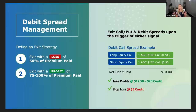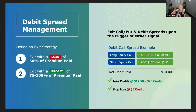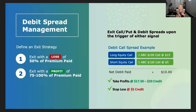An important Greek consideration: when a bull call spread's underlying stock blows through your higher strike, gamma — normally positive for a long call — turns negative. This is because gamma is centered around at-the-money options; once the underlying is above your higher strike, your short call becomes the closest-to-the-money leg. You can no longer capitalize on directional movement and instead need the stock to stay where it is, meaning you're now at risk from further upward movement.